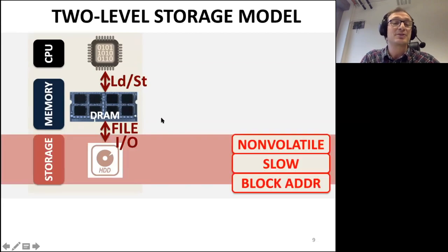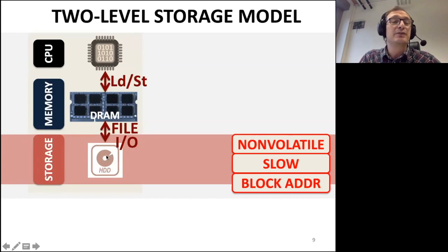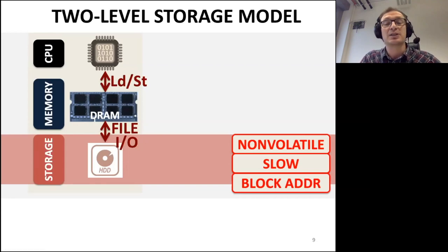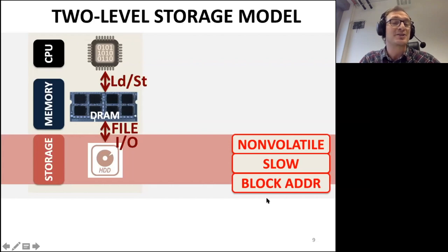Hard disk devices evolved — they were persistent and non-volatile, but slow and block-addressable. Whenever you go to a hard disk, you read a block — you can't easily read a byte. Existing devices normally read 512 bytes or larger, and you use that to build your file system on top. That's one of the major distinctions between hard disk and DRAM, in addition to the performance and the non-volatility. DRAM, on the other hand, is volatile unless you do a battery backup, but it's fast and byte-addressable.